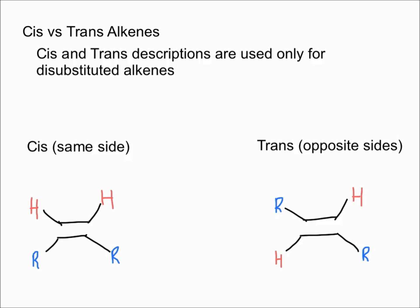A cis designation means that the R groups and the H groups are on the same side of the double bond. Imagine a middle line through the double bond — if the hydrogens are on the same side and the R groups are on the same side, that's a cis double bond. A trans double bond is when the R groups and hydrogen groups are on opposite sides of that middle line.